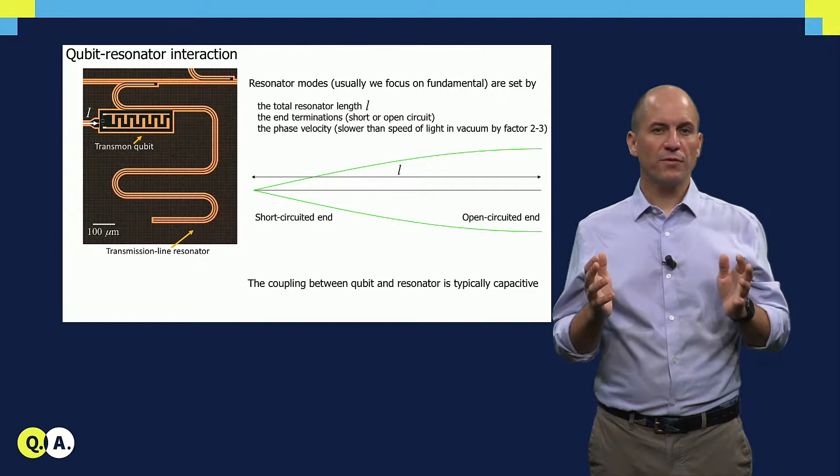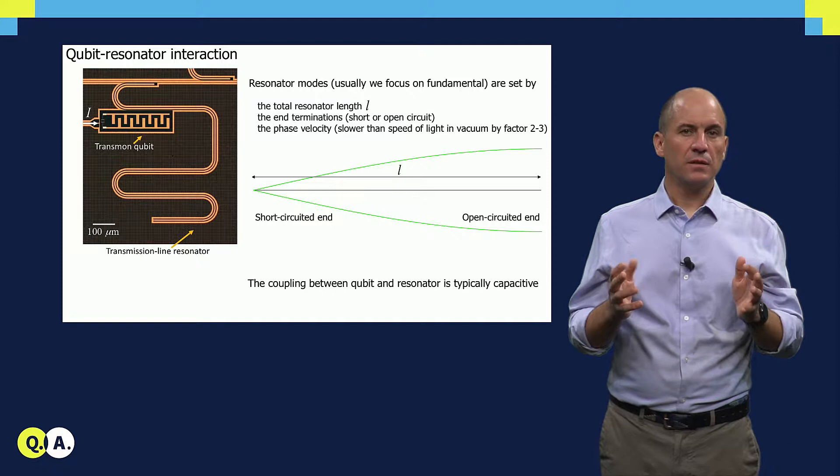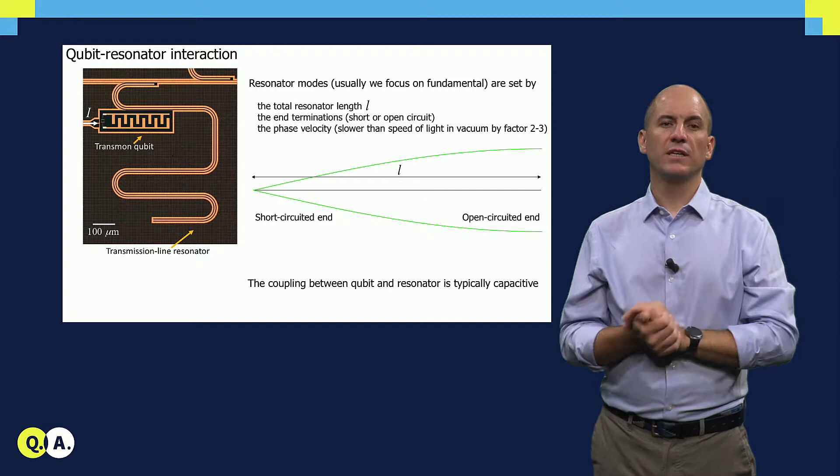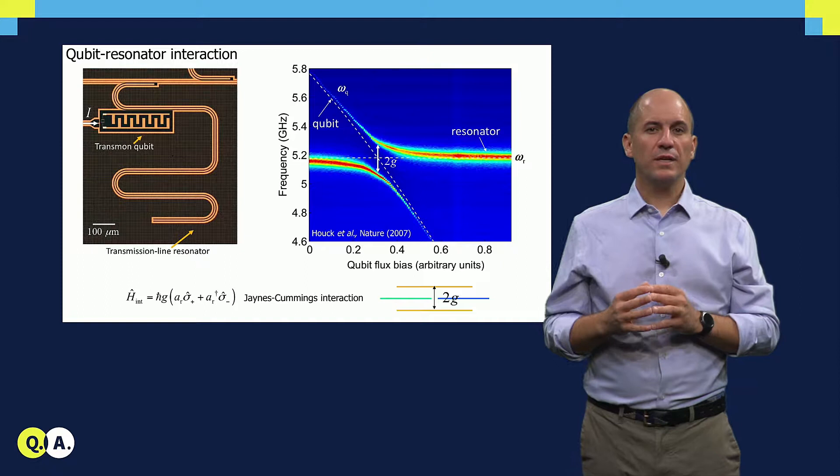The fundamental mode corresponds to the length matching approximately one quarter of the wavelength. For this reason, we call it a quarter wave or lambda over four resonator. Resonators have higher modes of resonance as well, but most of the time we focus exclusively on the fundamental.